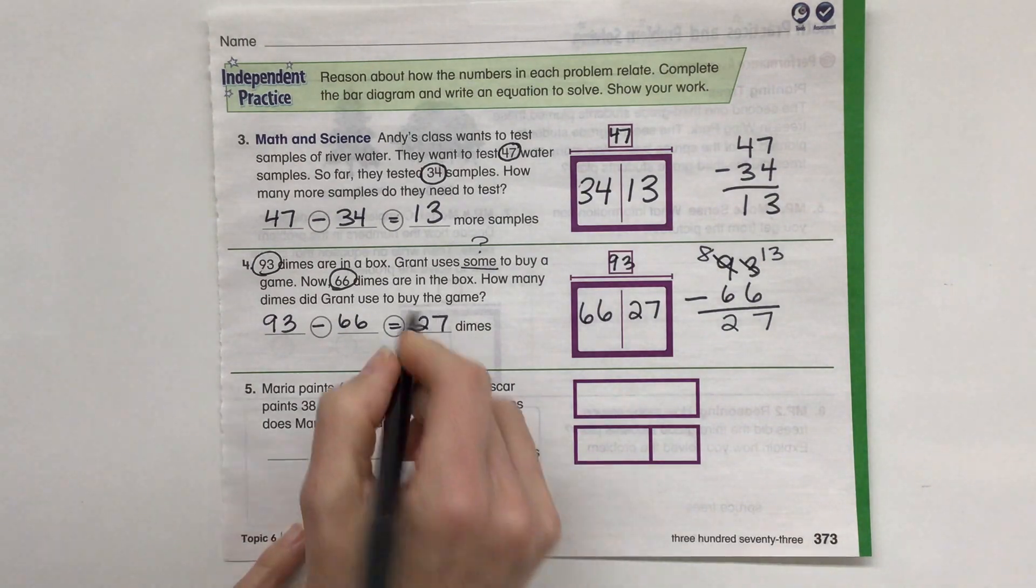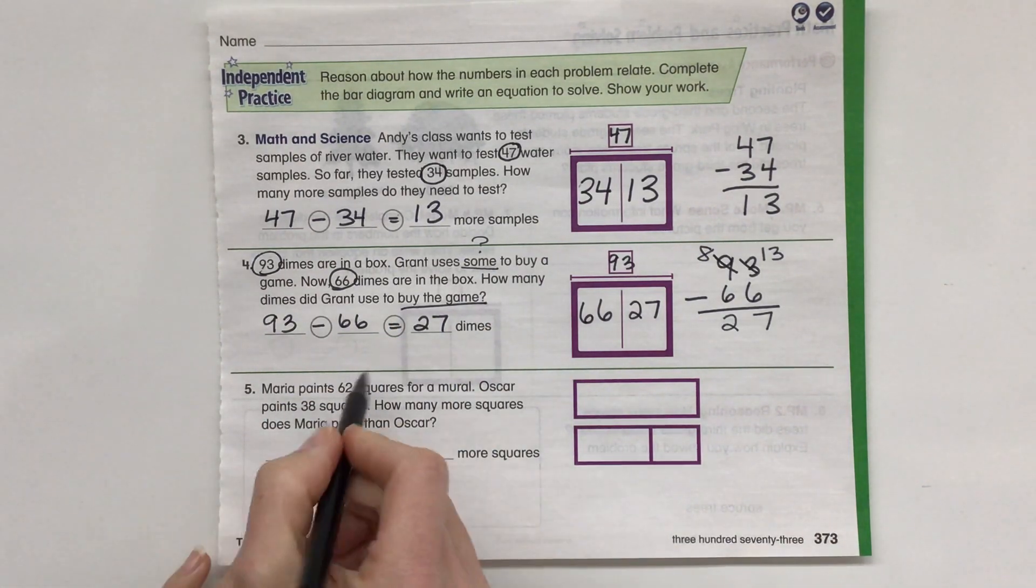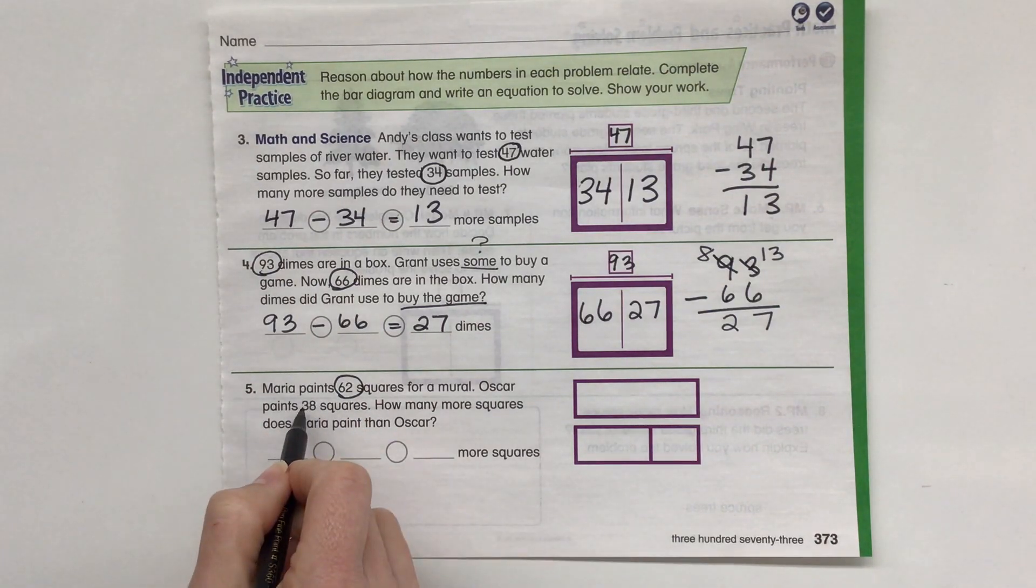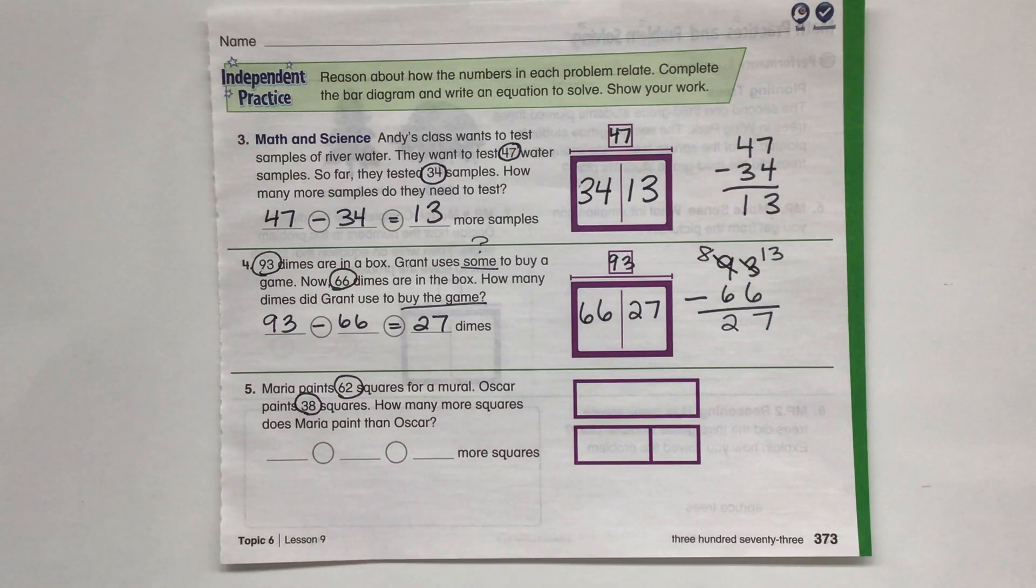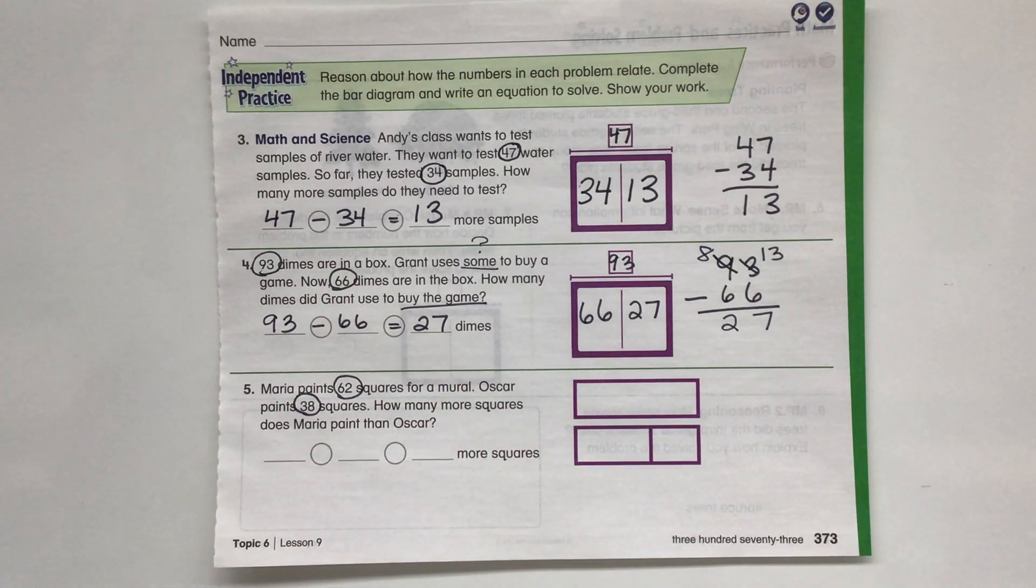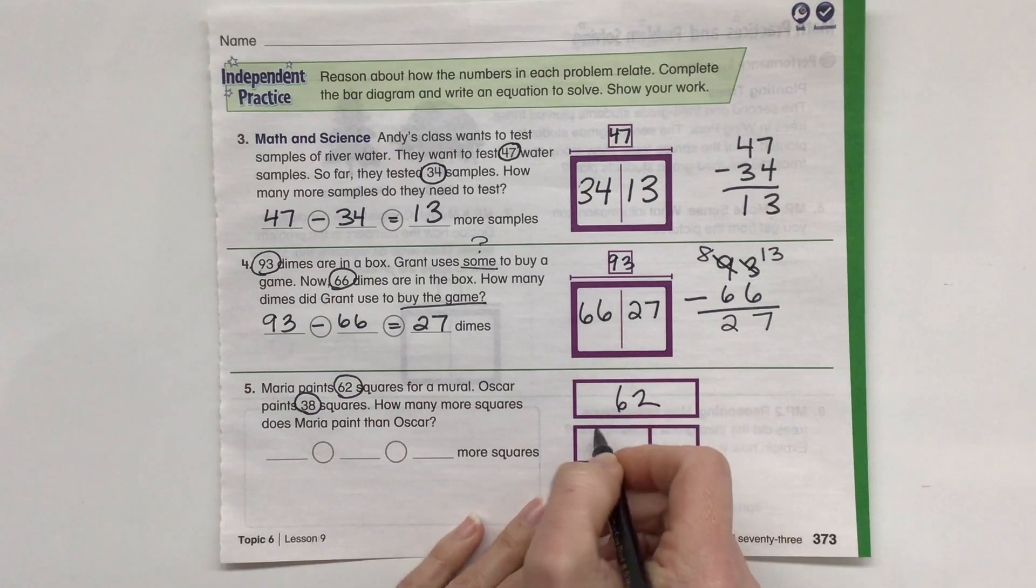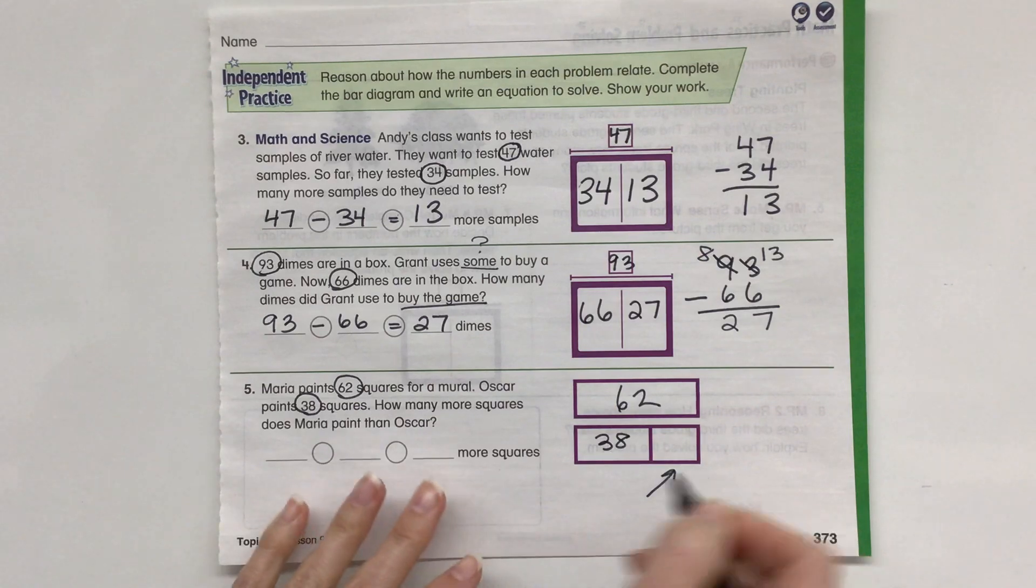So we had 27 dimes used to buy the game. All right, our last one is Maria paints 62 squares for a mural. Oscar paints 38 squares. How many more squares does Maria paint than Oscar? So we need to actually subtract these. We have 62 total squares. Oscar paints 38, and we need to find what that is over there.